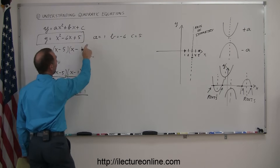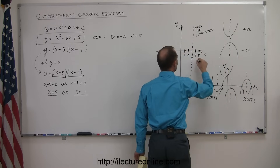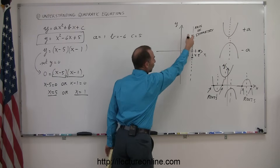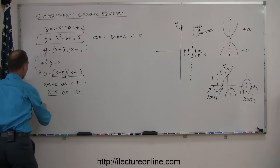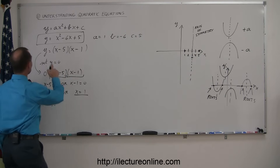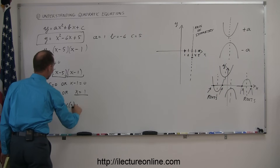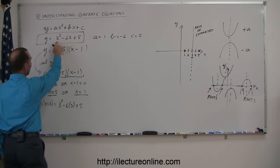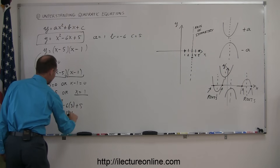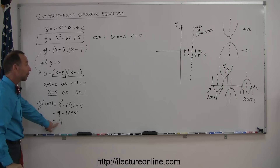Since the number from the x squared term is positive, the parabola opens upward. To find more details, I plug in the axis of symmetry value x equals 3 into the equation: 3 squared minus 6 times 3 plus 5 equals 9 minus 18 plus 5, which equals negative 4. So when x equals 3, y equals negative 4.